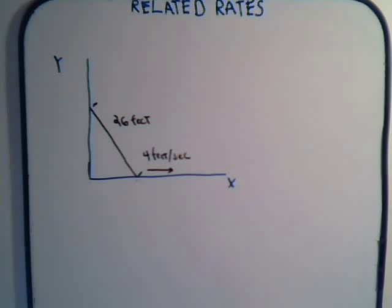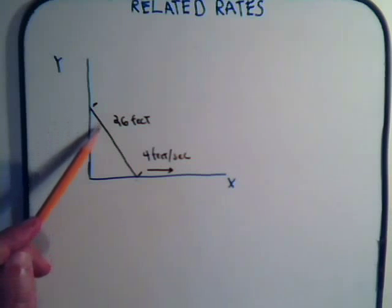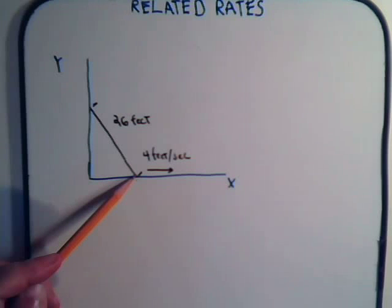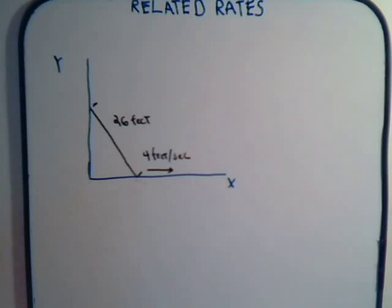Okay, here's another related rates problem. We have a situation where a ladder is leaning up against a wall. The ladder is 26 feet long, and we're pulling the base of the ladder away from the vertical wall at a rate of 4 feet per second.